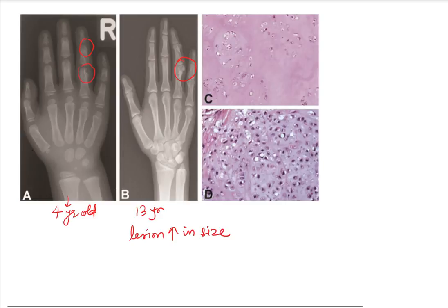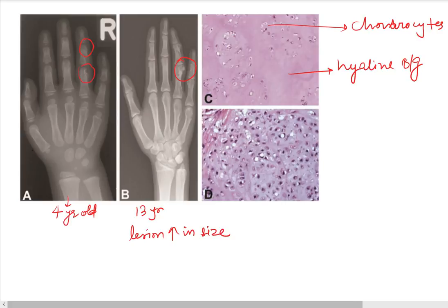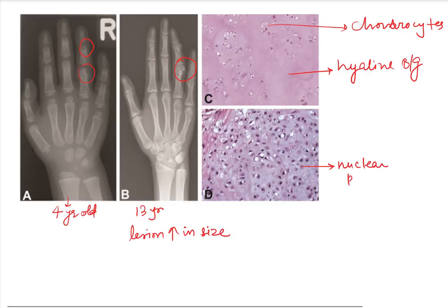Image C is representing the hyaline background. If you do a biopsy and send the sample, we see a hyaline background on H&E staining. These cells are chondrocytes. In the next image, you can see nuclear pleomorphism and mitosis.